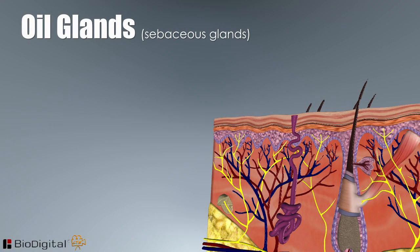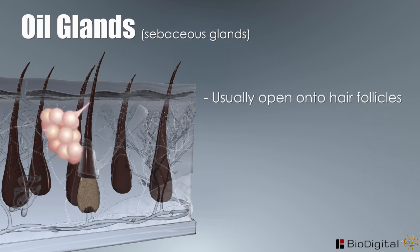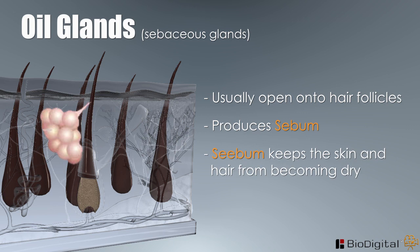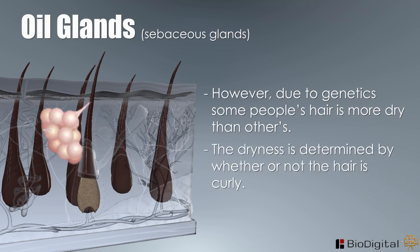Oil, or sebaceous glands, usually open onto hair follicles. These glands produce sebum, an oil that keeps the skin and hair from becoming dry. However, due to genetics, some people's hair is drier than others. The dryness is determined by whether or not the hair is curly — the curlier the hair, the drier the hair, even when the amount of sebum produced is the same.